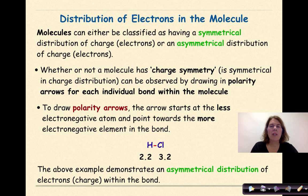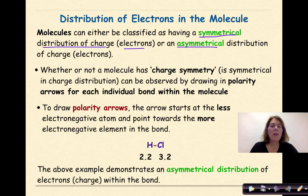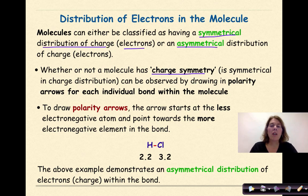Let's talk about distribution of electrons in the molecule. Molecules can either be classified as having a symmetrical distribution of charge — electrons — or asymmetrical distribution of charge. Whether or not a molecule has charge symmetry, in other words an even distribution of charge, can be observed by drawing in polarity arrows for each individual bond within the molecule. Polarity arrows are going to be absolutely key to figuring out molecular polarity.